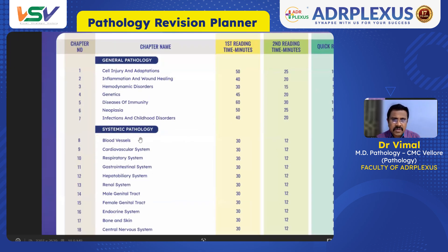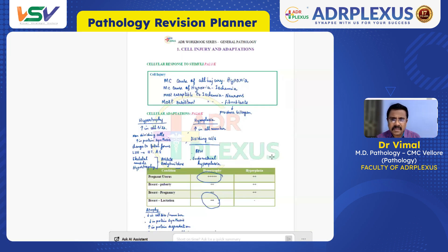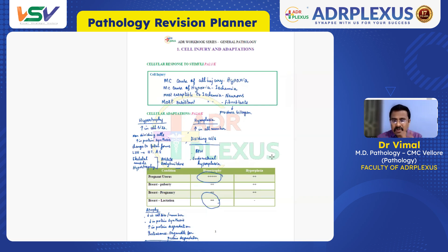In general pathology, for cell injury and adaptation, we have allocated approximately 50 minutes for the first reading. In your first reading, using the general path annotated PDF, you go through only the high-yield points — for example, hypoxia and ischemia: ischemia is the most common cause of hypoxia. These kinds of key facts you go through, but most things you would have already covered in the first reading.